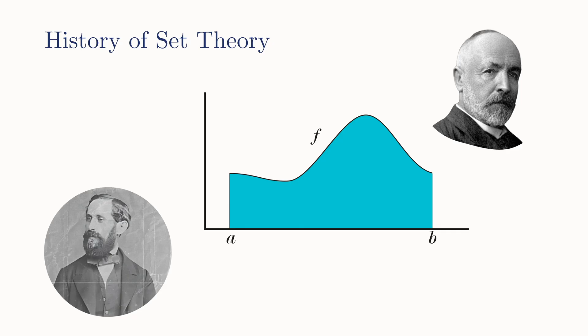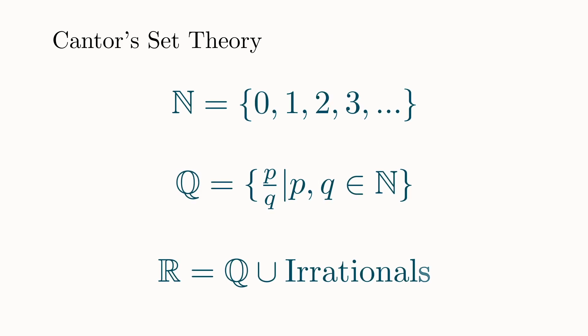In a series of papers written in the 1870s, Cantor developed the main ideas of set theory and considered different sets of numbers like the natural numbers, the rational numbers, and the real numbers. Specifically, he was interested in the size or cardinality of these sets.